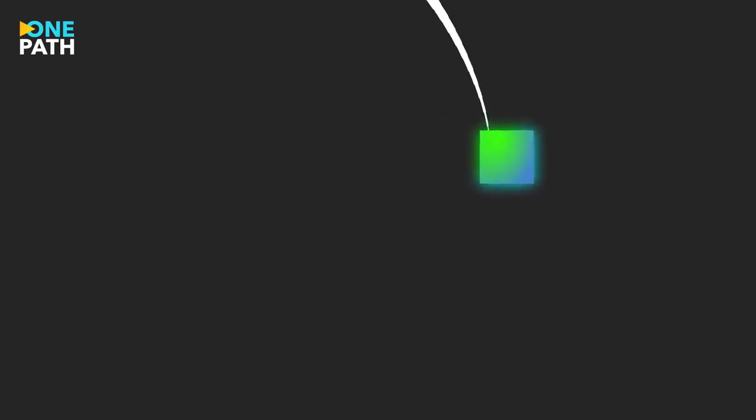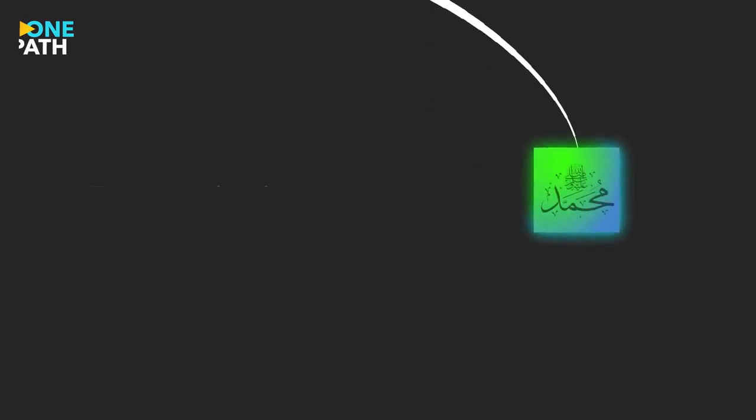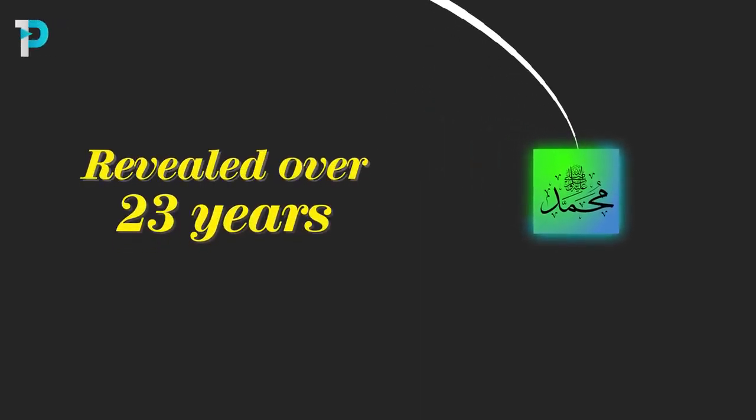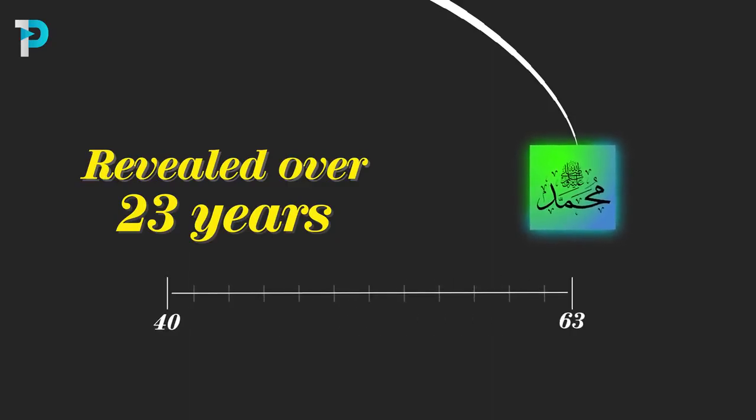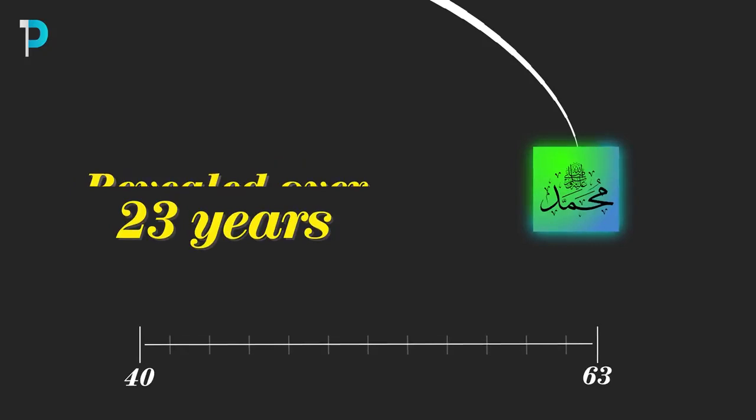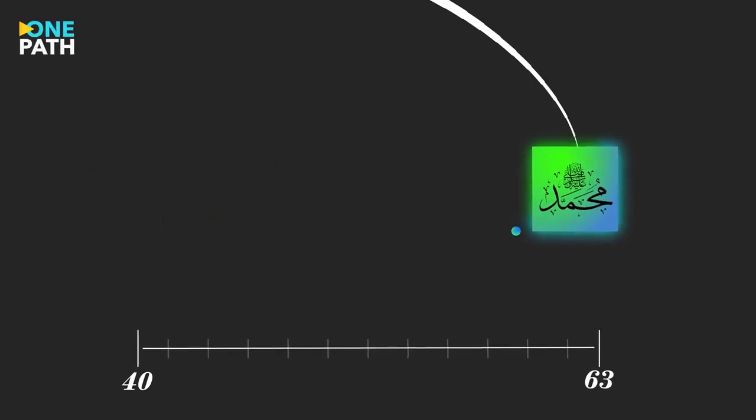According to the Muslim understanding the Qur'an was revealed to the Prophet Muhammad over 23 years from the age of 40 to his death at the age of 63. Over those 23 years he received the revelation from God in a number of ways.